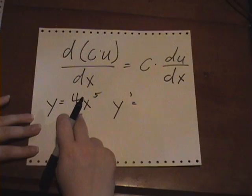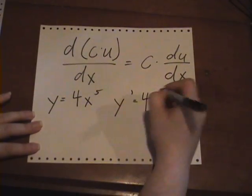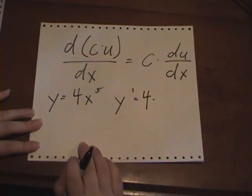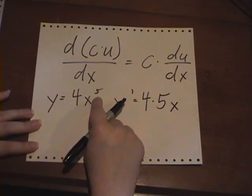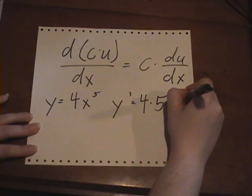then the derivative is you take the 4 out, and then you do exactly what you did for the power rule. You take the 5 out, times it by 5, and then you have x, and then you subtract 1 from that, 4.